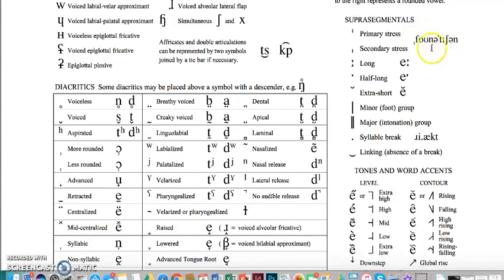And then there's secondary stress, phonetician. So this syllable, ti, is secondarily stressed, and so we put the stress mark before it, but it goes above for the secondary stress.